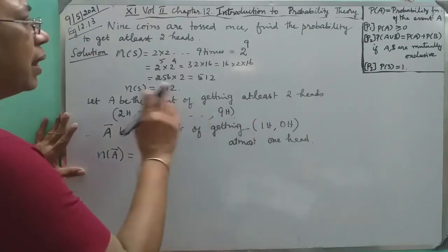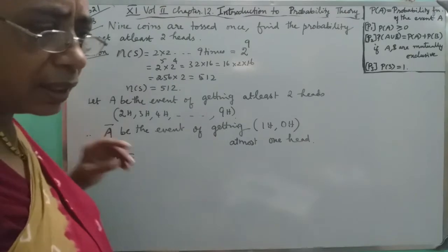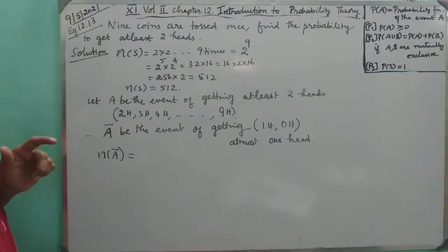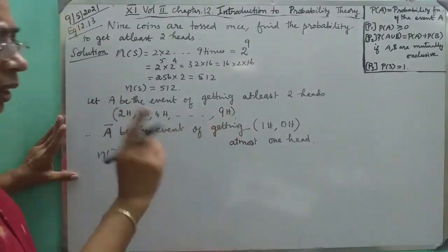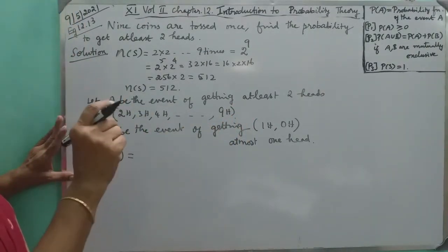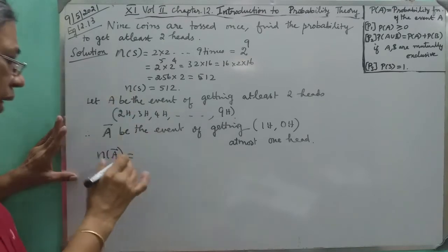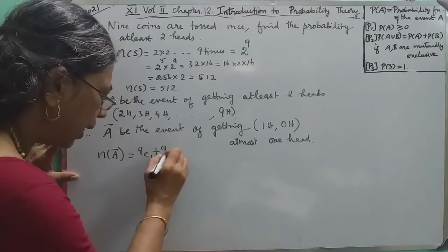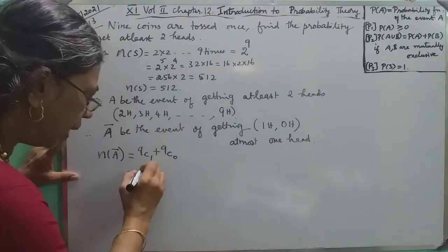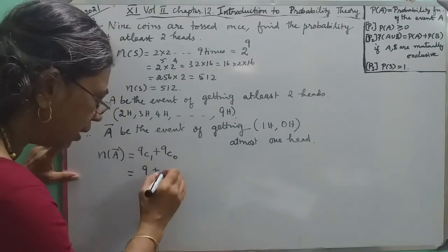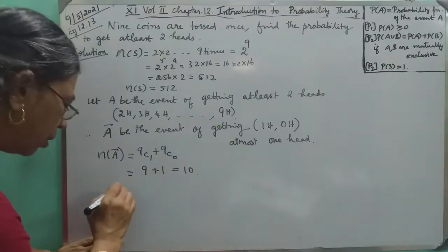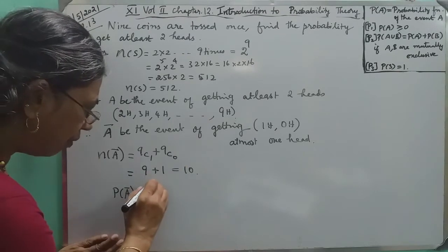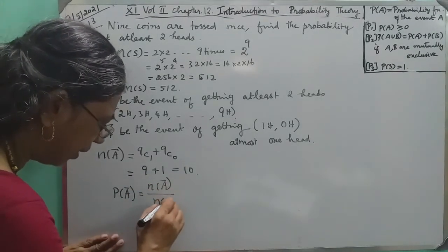With nine coins tossed, nine coins one head is 9C1, and nine coins zero heads is 9C0. Add them: 9 plus 1 equals 10. This is n(A bar), the probability of A bar formula.